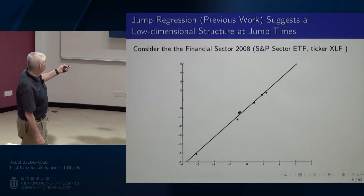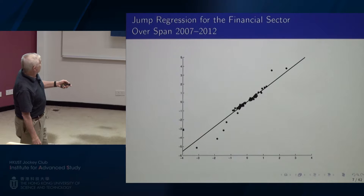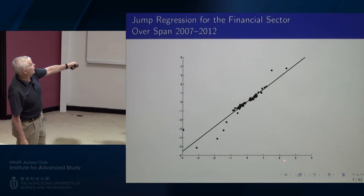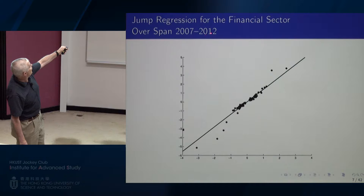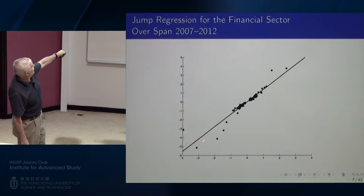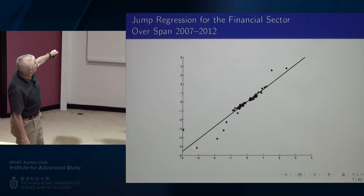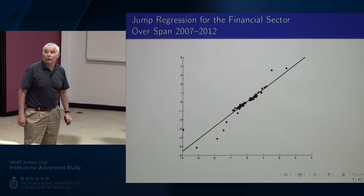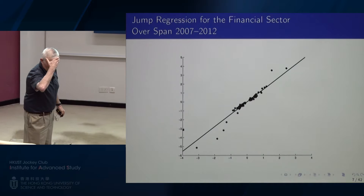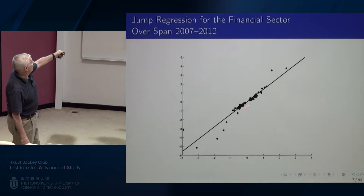In 2008, if you take all of the market jumps over 2007 to 2012 and plot the returns on the same ETF against the market jump, it's not quite so collinear anymore. If you look at it, you might want to do robust regression instead of ordinary least squares. We actually have a paper coming out in JASA dealing with robustly estimating these jump regressions.